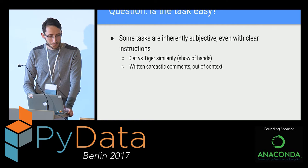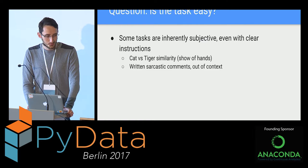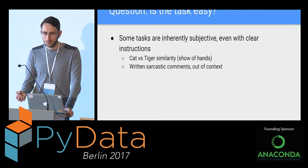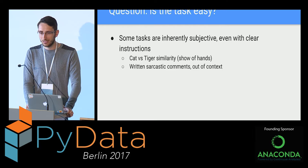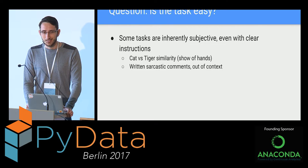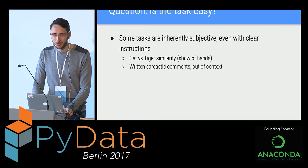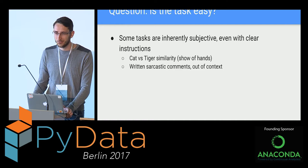Even if you could define your task well, certain tasks are just very difficult for a human. There's inherent subjectivity. For example, detecting sarcasm in text is really hard without any facial or visual cues, and especially hard to do out of context. If you just get a text that says 'yes, nice' with no voice cues or intonation, you can't really tell if someone's being sarcastic. So if a human can't do it, how can we expect them to give us that information to train a machine?